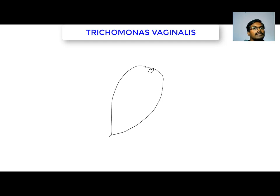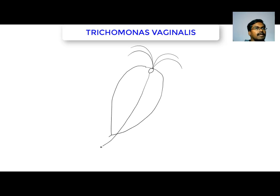Since it is pear-shaped, you should draw a pear-shaped structure first. Draw a small circle at the upper, anterior end, and draw two pairs of flagella. Then draw the axostyle, which starts from the anterior end.